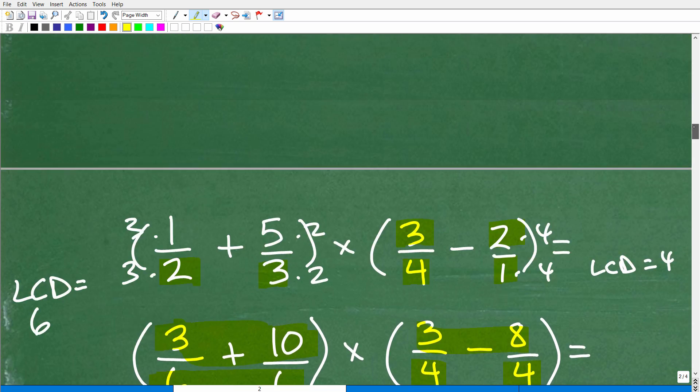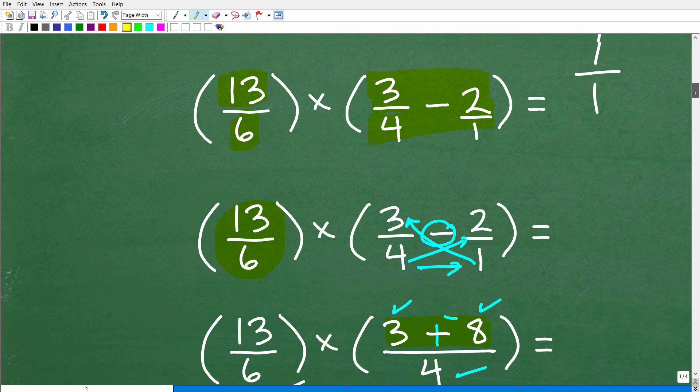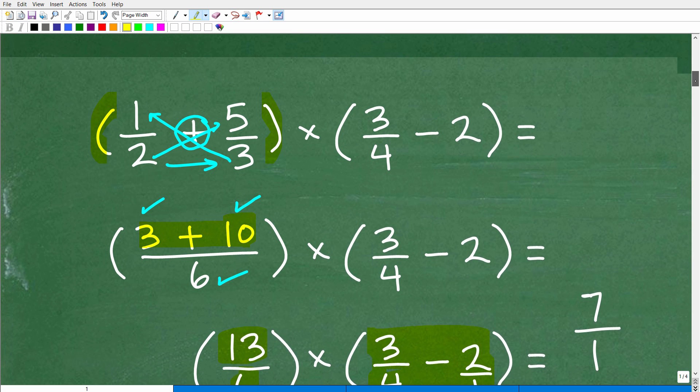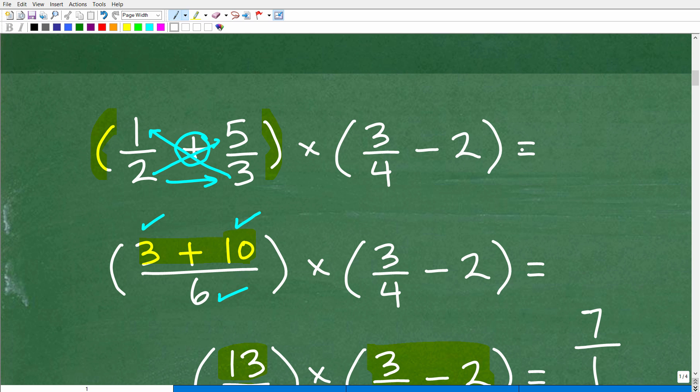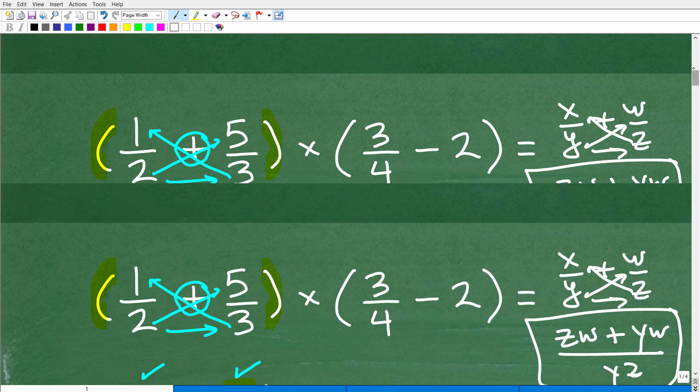I'm showing you both ways. You need to know both ways. You need to understand this bowtie method. This is one of the best things that you can know for algebra, dealing with variable fractions. Because if you have something like x over y plus w over z, you might be confused about the LCD. But if you just do this bowtie method, this would be z times x plus y times w over y times z. That's how you would add these fractions. You've got to know this little technique.